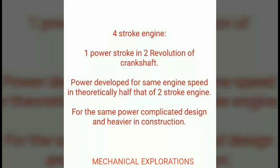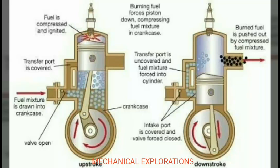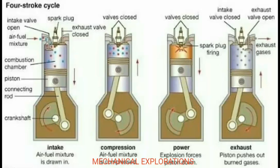Looking at the diagram: in a two-stroke engine, fuel is injected and two strokes produce one power stroke per revolution. In a four-stroke engine, you can see one stroke followed by another, making two revolutions to produce one power stroke. The four-stroke cycle includes intake, compression, power, and exhaust strokes.